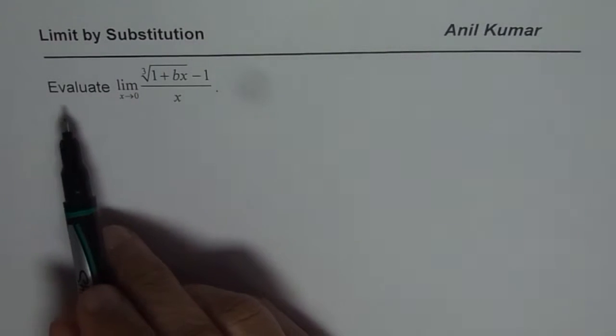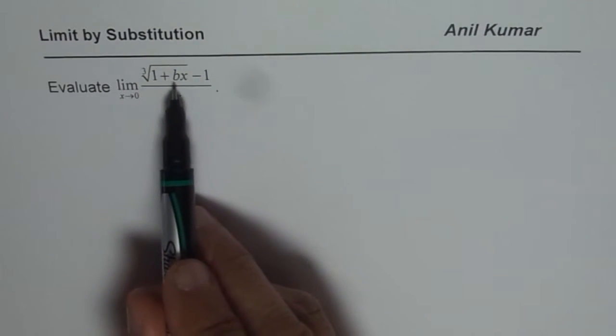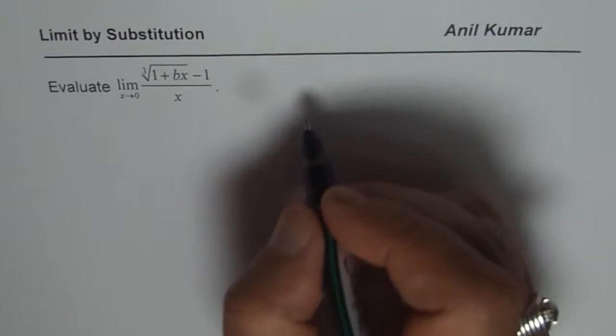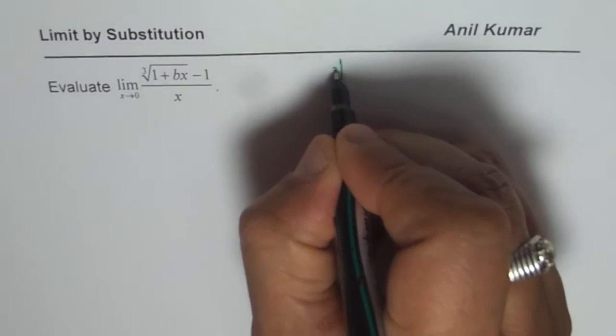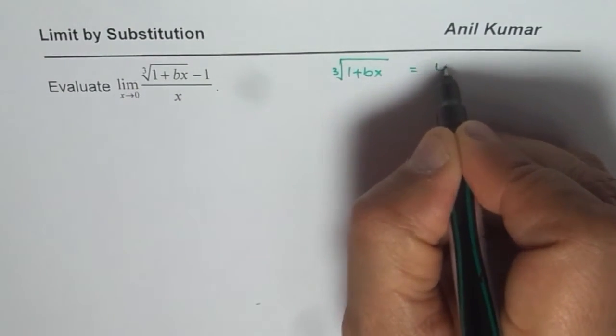Now here we have: evaluate limit as x approaches 0 for cube root of 1 plus bx minus 1 divided by x. We are going to substitute cube root of 1 plus bx with some other variable. Let that variable be u.